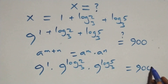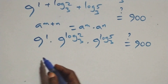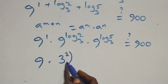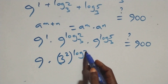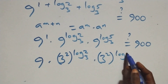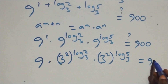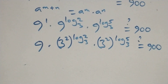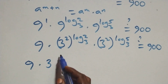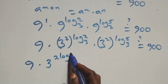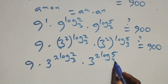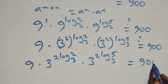This equals 900 on this side. Then 9 raised to power 1 is 9. We can write 9 as 3 squared, so we have 9 times (3 squared) raised to power log base 3 of 2, times also (3 squared) raised to power log base 3 of 5, equals 900. And next we will reverse this using the log-exponent rule: 9 times 3 raised to power log base 3 of 5 equals 900.